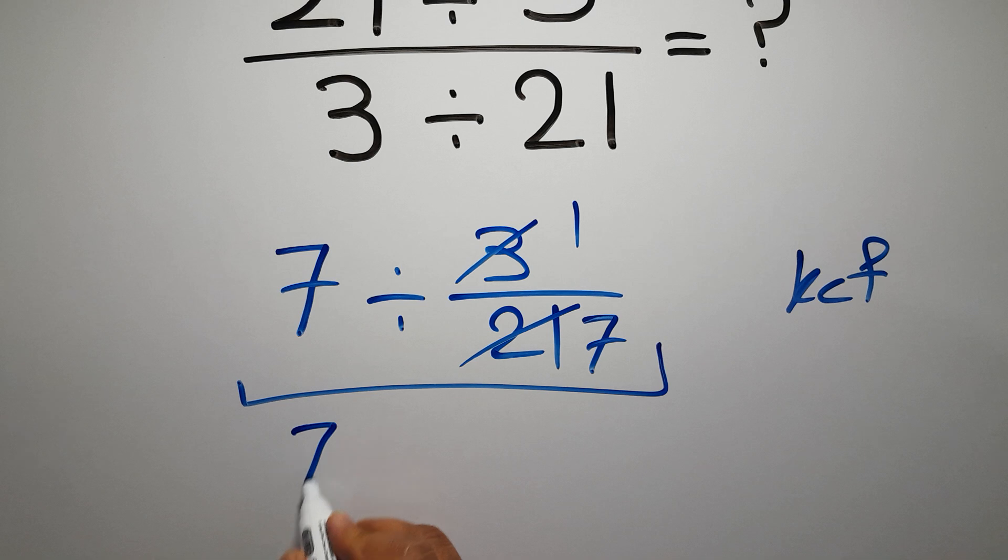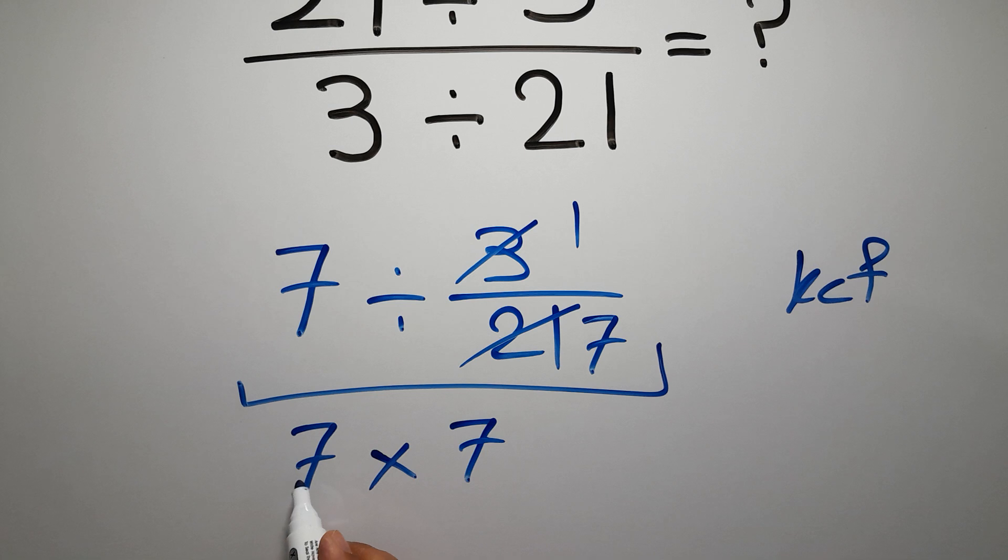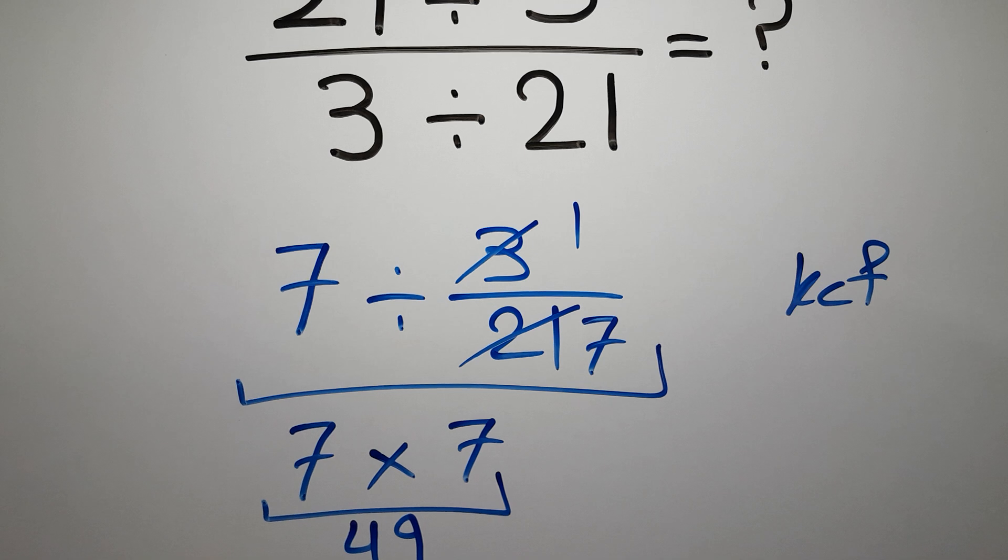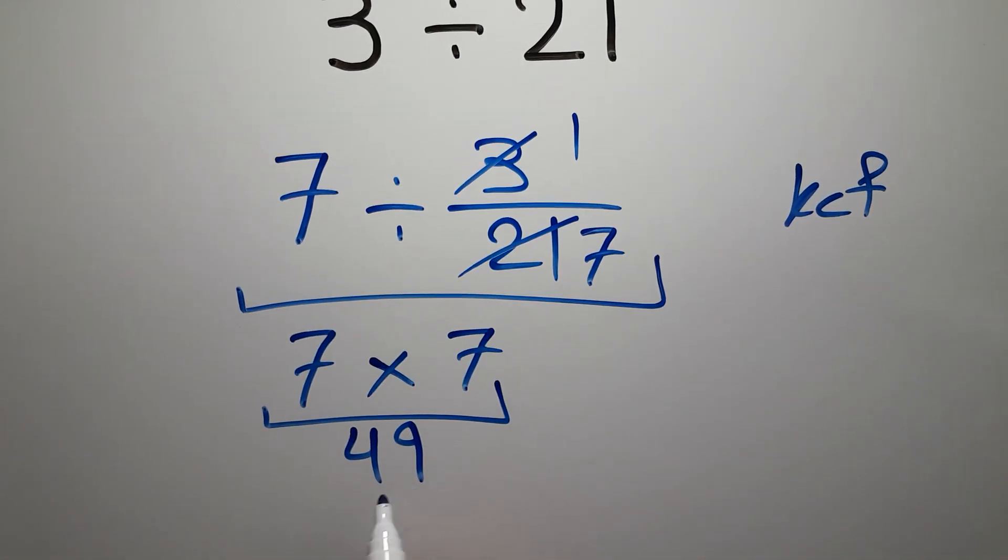Change division to multiplication and flip the second fraction. So we have 7 times 7, which equals 49.